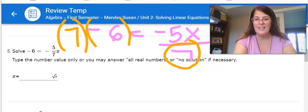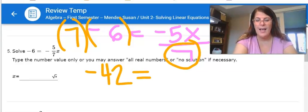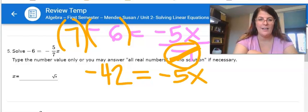So on the left, 7 times negative 6 is negative 42. On the right, the reason I did the multiplying is because if I have 7 divided by 7, it will cancel out and I have negative 5x.